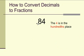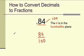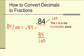Now, if we have the number .84, the 4 is in the hundredths place, so that means that 84 will be put over 100. If you do 84 divided by 100 equals in your calculator, you will get .84.